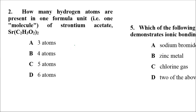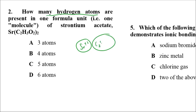Problem number two. This is asking you to count atoms — how many hydrogen atoms. So what you should be able to do is see the picture: Sr is a plus two, acetate C₂H₃O₂ minus, C₂H₃O₂ minus.